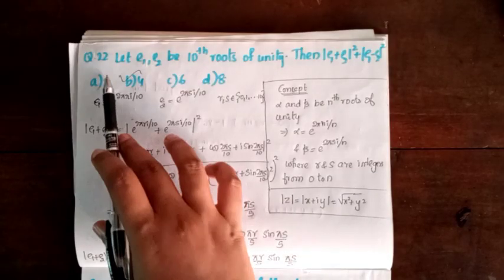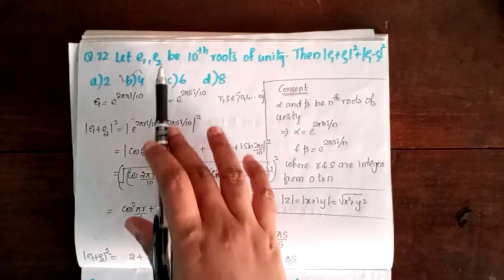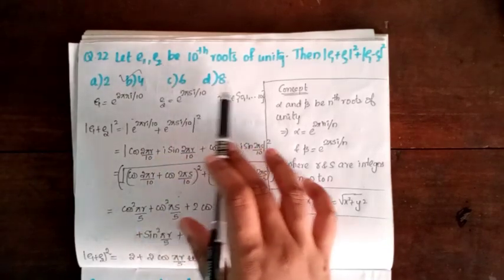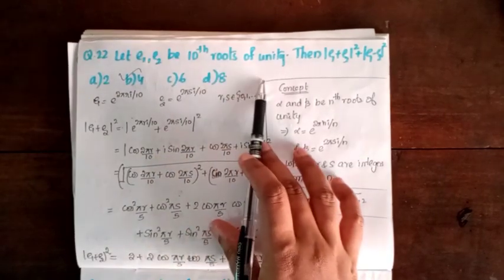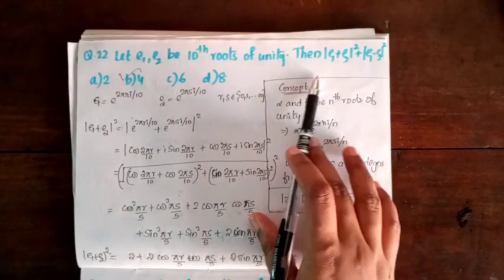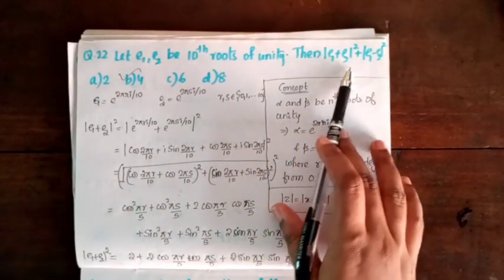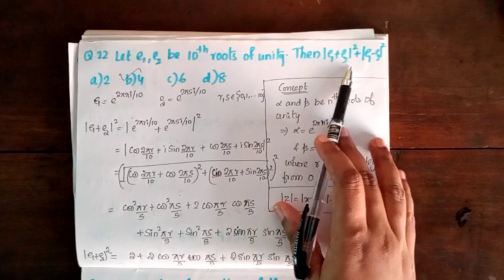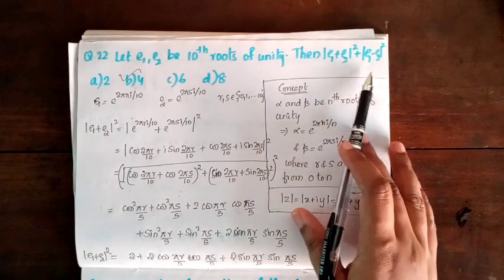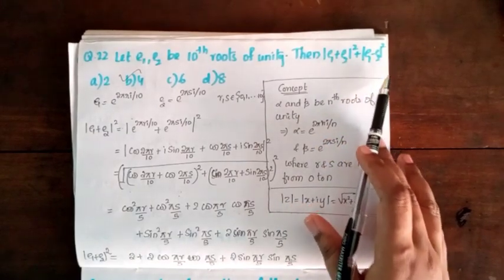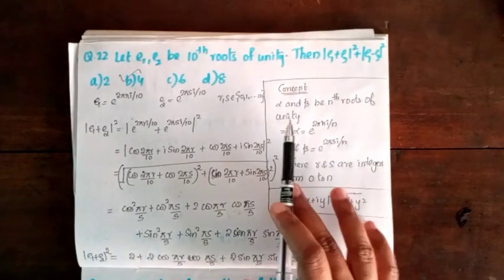Next, Question 22. Let e₁, e₂ be the 10th roots of unity. Then find |e₁ plus e₂|² plus |e₁ minus e₂|².